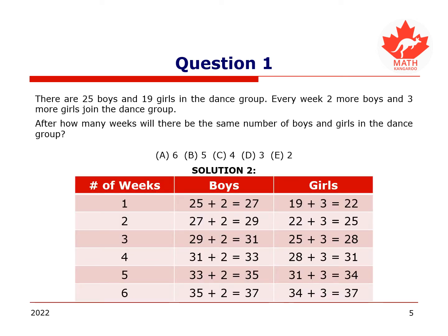Here is the second solution. It is possible to approach this question by finding the number of boys and girls after 1, 2, 3, and more weeks until these numbers become the same. After 1 week, boys become 25 plus 2 equals 27, and girls become 19 plus 3 equals 22. Then at week 2, there will be 29 boys and 25 girls, and we continue until we reach the 6th week, after which boys will equal 37 and girls will equal 37, by counting systematically.